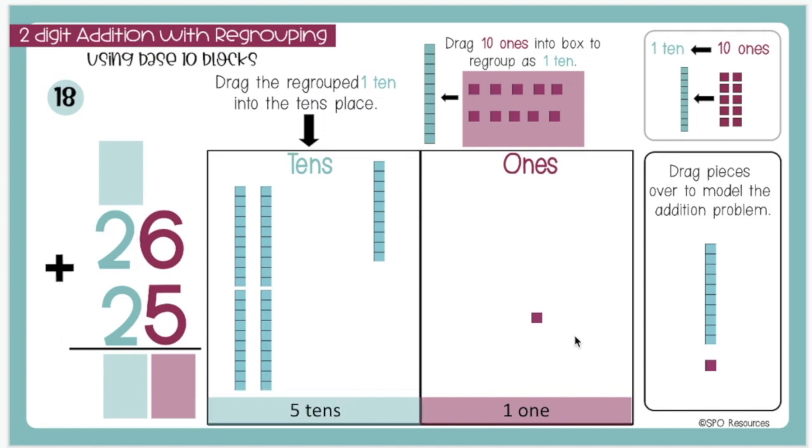After I've completed modeling on the place value mat, I will show the problem using the standard algorithm. 6 plus 5 is 11. I will type a 1 in the 1s place and carry a 1 to the 10s place. Then I will add the total for my 10s place, which is 5, for a sum of 51.